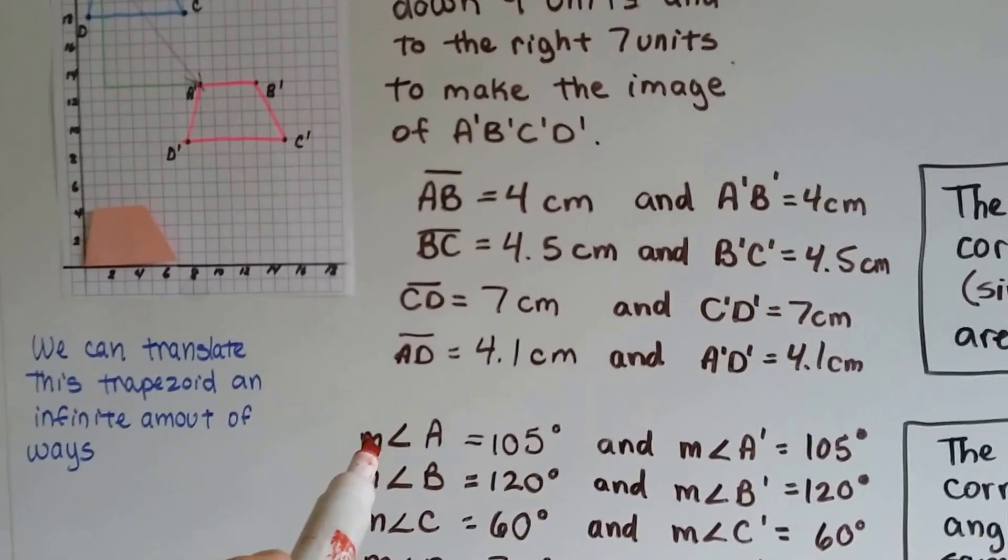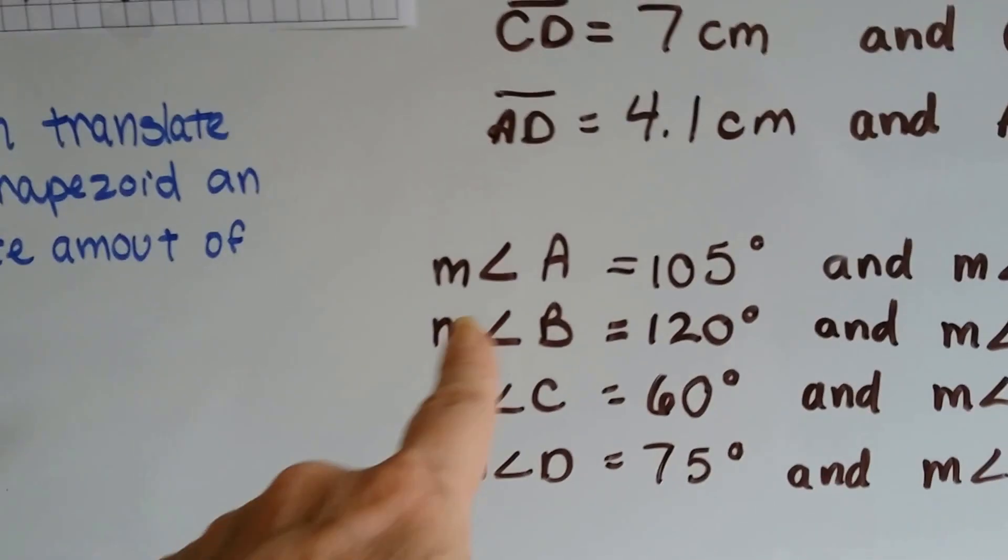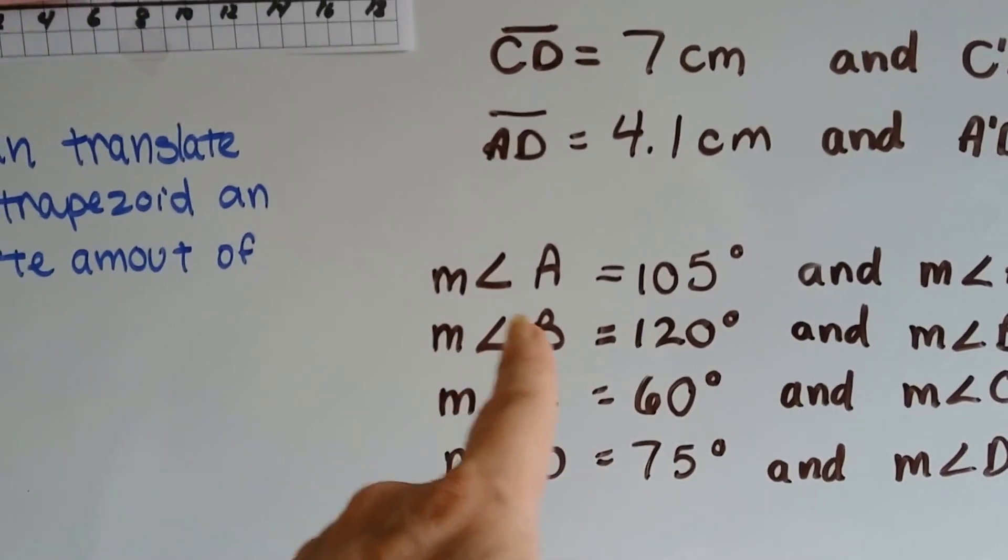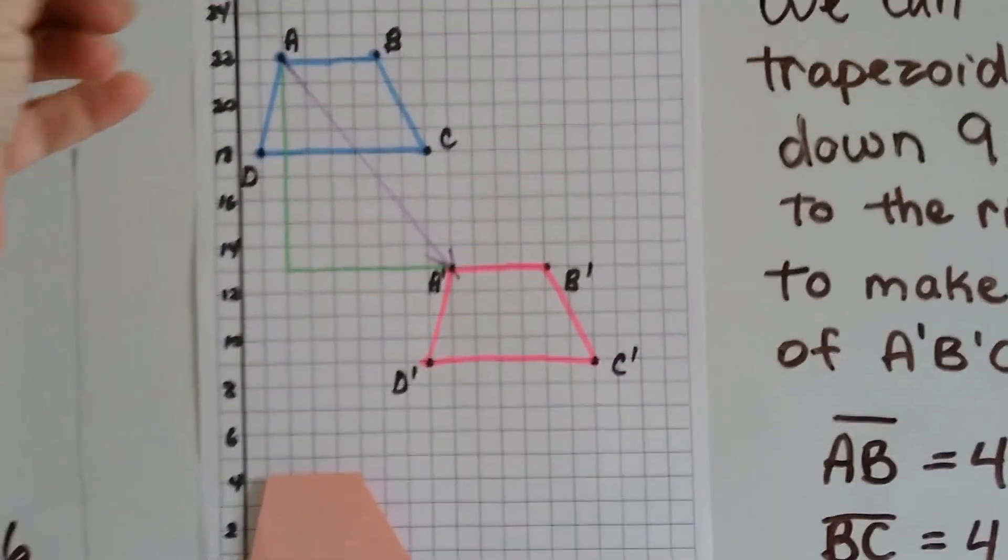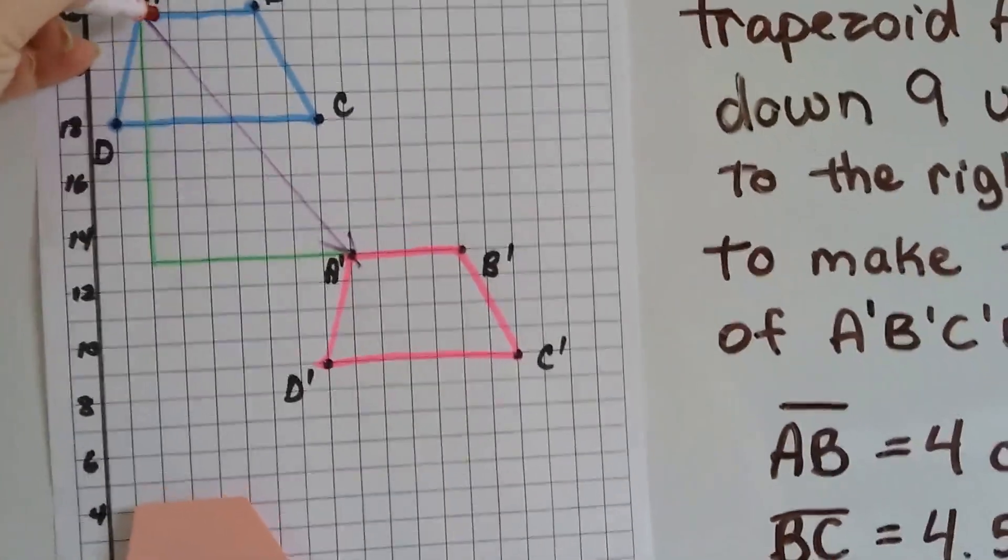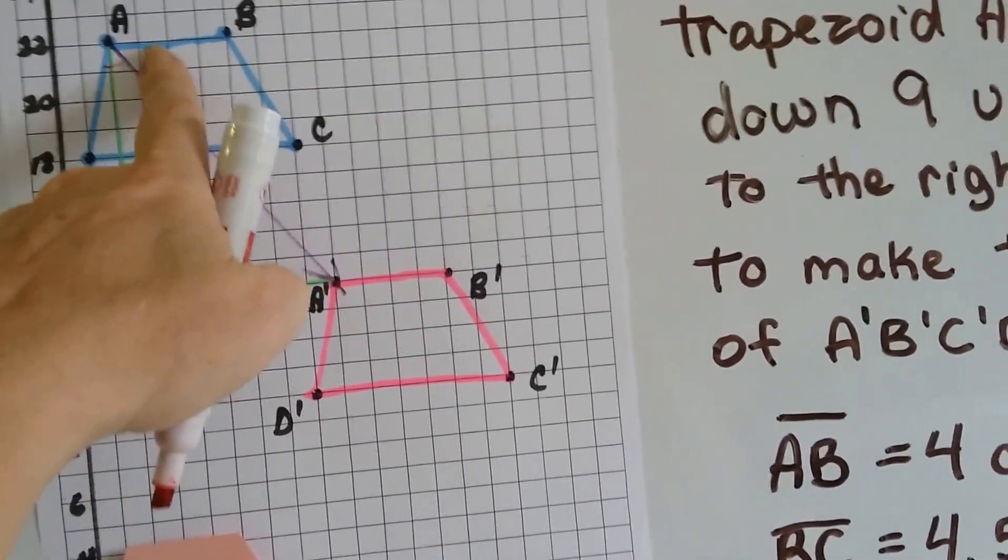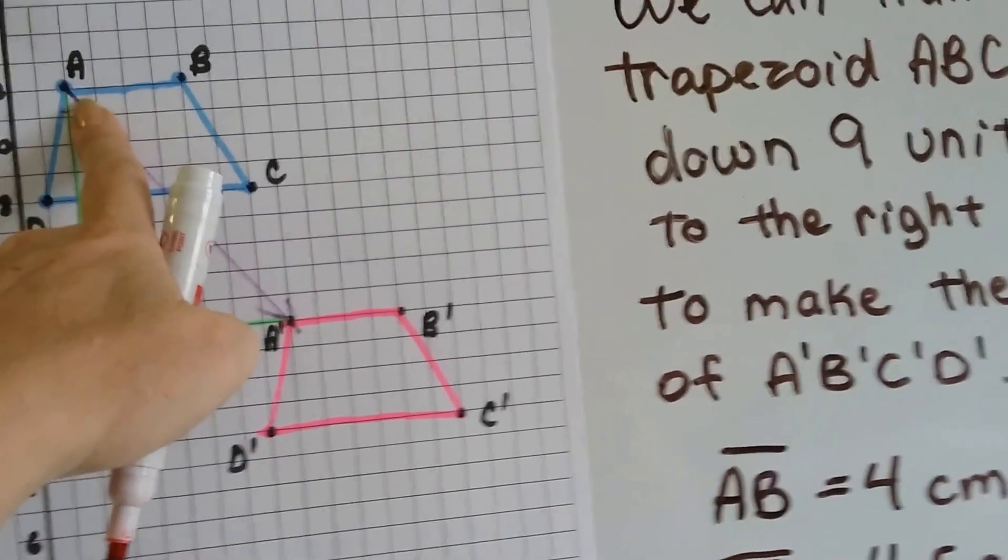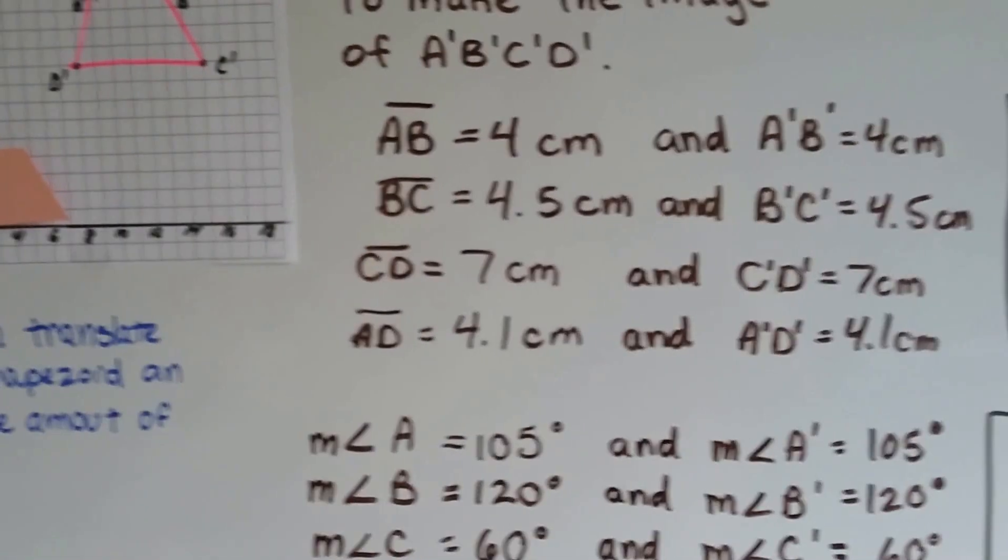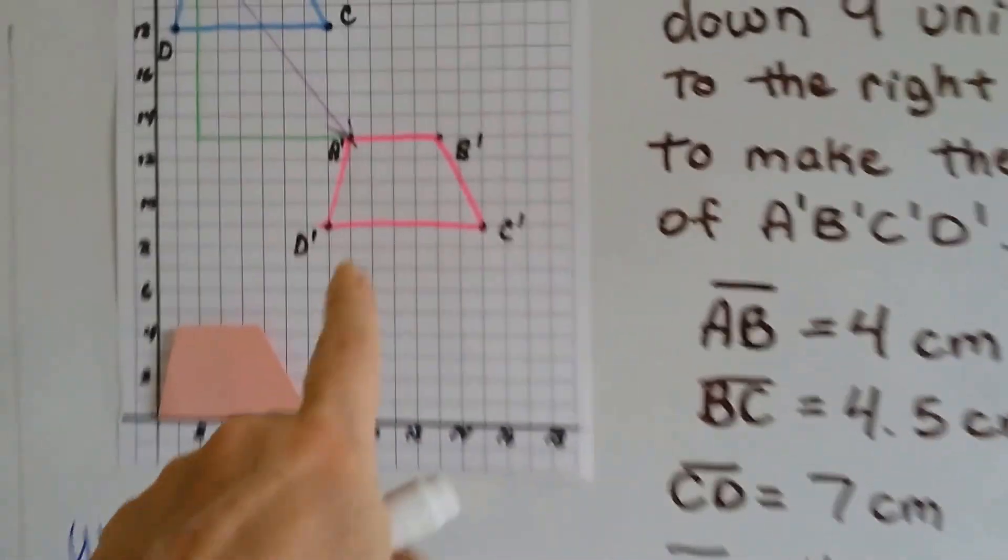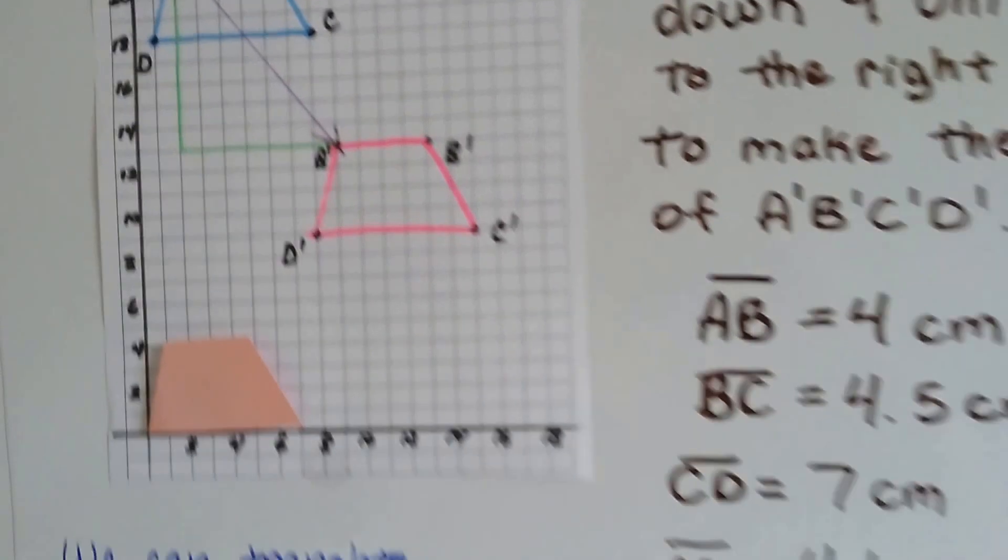We have the measure of angle A. When there's a little M in front of this angle symbol, that's the measure of angle. The measure of angle A, that is this measure right inside here, from this blue line to that blue line. That measure is 105 degrees, and the measure of angle A prime is also 105 degrees.